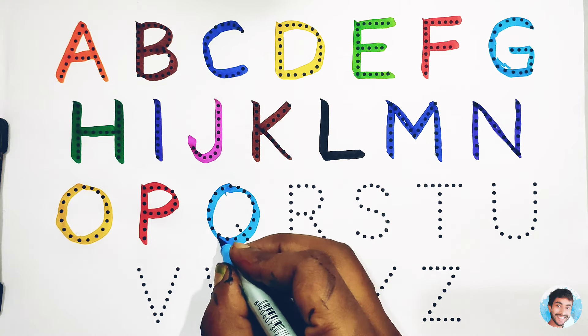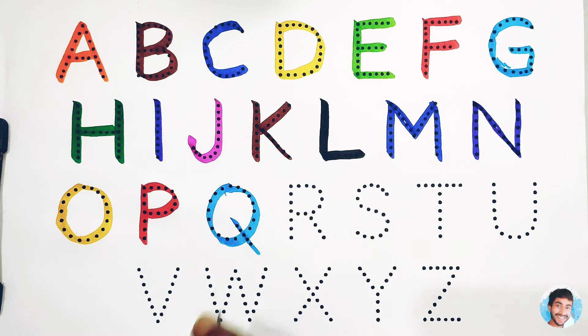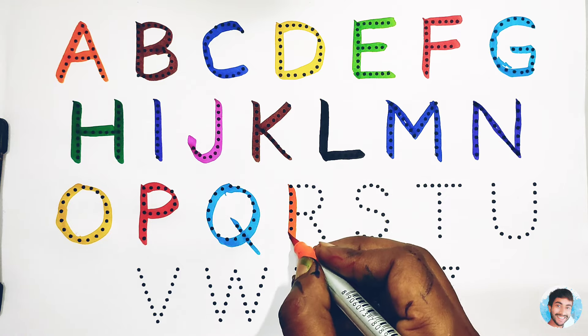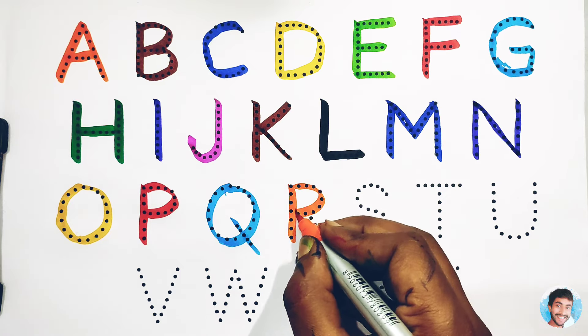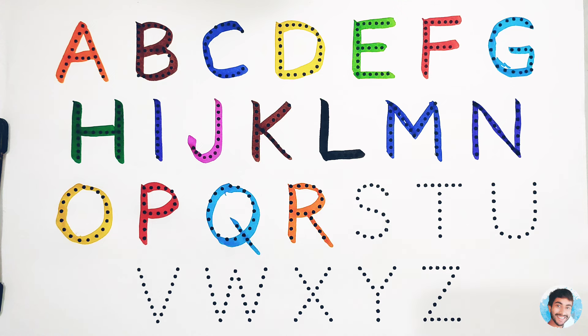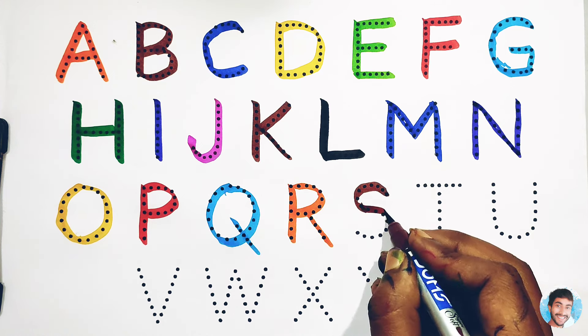Q, Q for Queen, Queen means Rani. Orange colour R, R for Rose, Rose means Gulab. Brown colour.